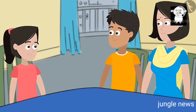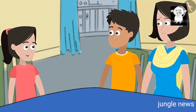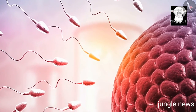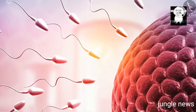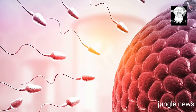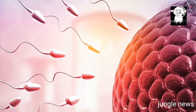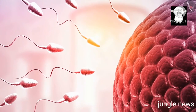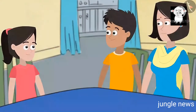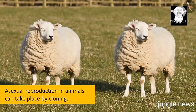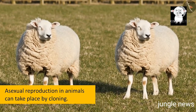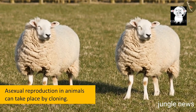Mummy, I am still confused. How can animals reproduce asexually? I mean, of course they cannot be propagated or grafted. No, Sanya, asexual reproduction can take place by other ways too, like cloning.